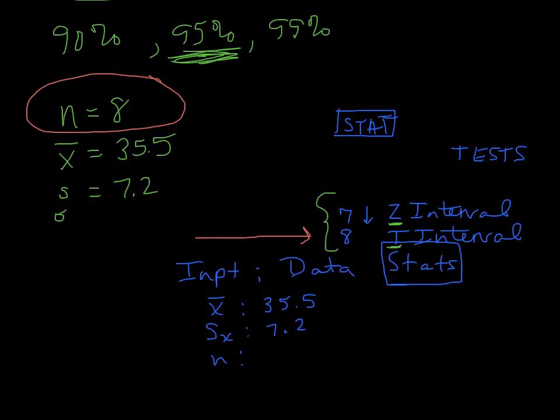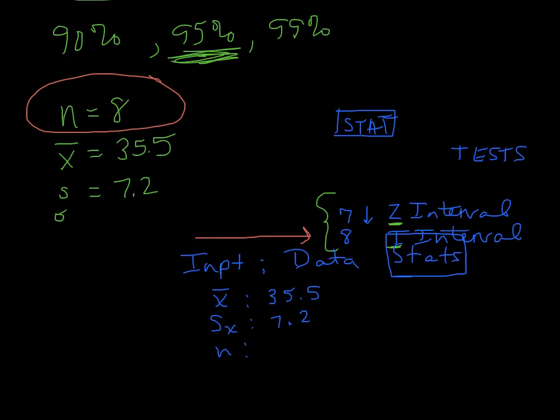And then it wants to know, it says C level. That's confidence level. So our problem gave us 95. This is important. You have to write that percent as a decimal. So it's 0.95. Make sure you put that as a decimal. If you get an error, that's likely why.